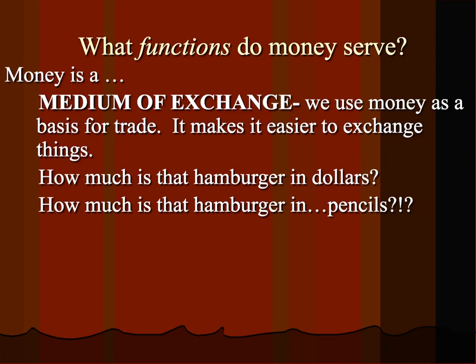The first function of money is what we call a medium of exchange. We use money as a basis for trade — it makes transactions easier. For example, you know about how much a hamburger is in dollars, but if we didn't use money and let's say you made pencils for a living, how much is that hamburger in pencils? Is it 20 pencils? Is it 150 pencils? Are these handcrafted fine pencils, or just run-of-the-mill don't-work-fall-apart pencils? What if the hamburger person doesn't want your pencils — then you can't make a trade. So money makes trade easier; it acts as a medium of exchange.